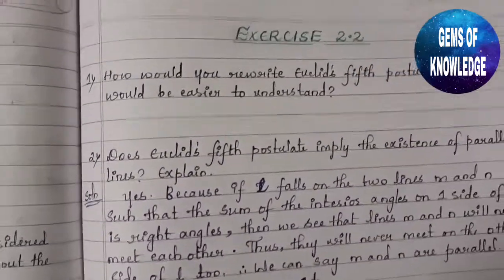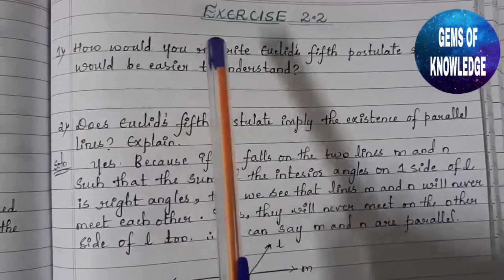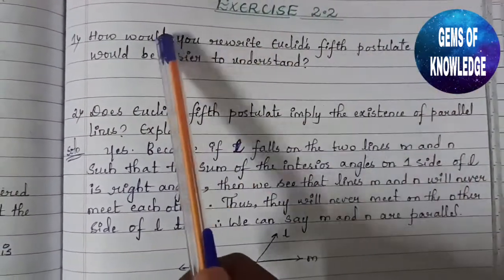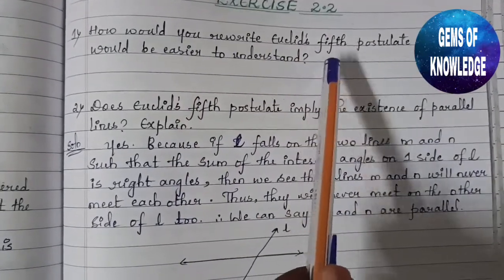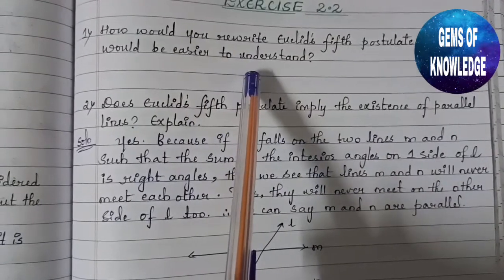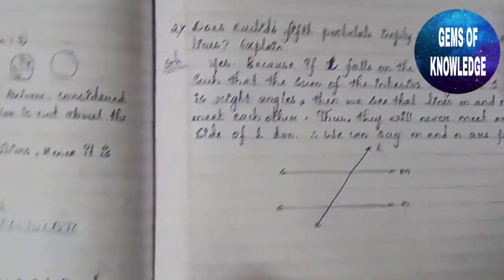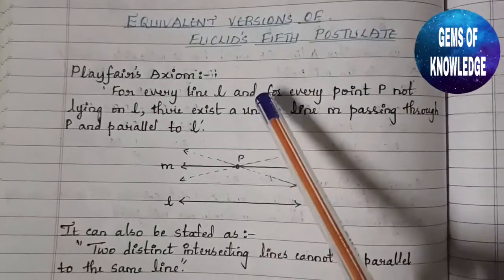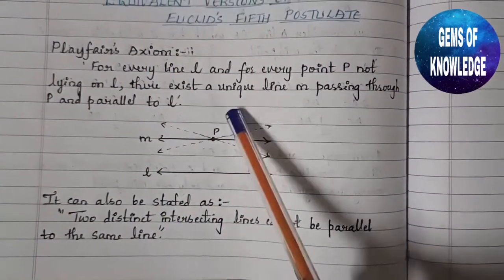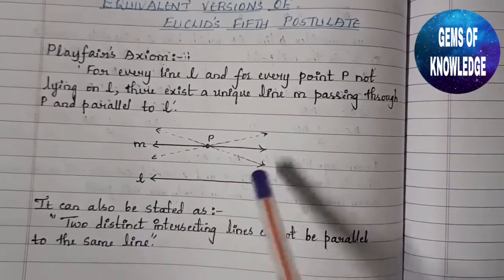Now we are going to study Exercise 2.2. The first question asks: how would you rewrite Euclid's fifth postulate so that it would be easier to understand? You can write either Playfair's Axiom or the statement about two distinct intersecting lines — both are equivalent versions of Euclid's fifth postulate.